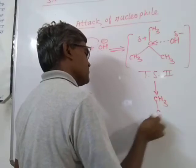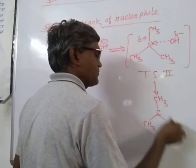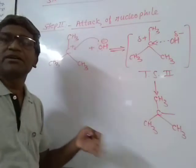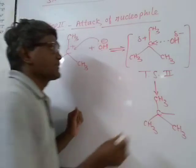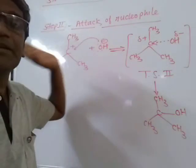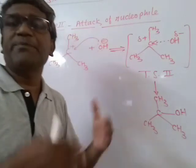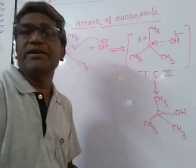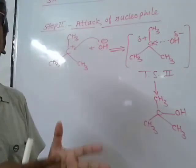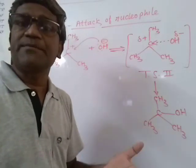If the substrate is optically active, at present in this case it is not optically active because we are using tert-butyl bromide, which does not have any chiral carbon. But if the substrate is optically active, the product formed will have 50% dextrorotatory and 50% levorotatory composition, making that mixture optically inactive. So that is called racemization.